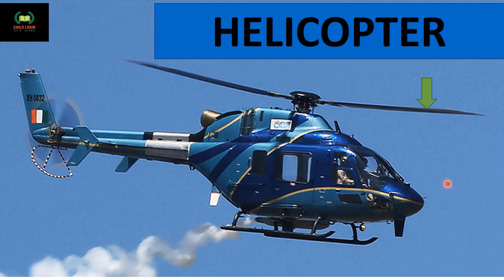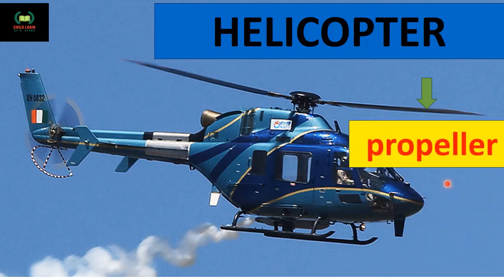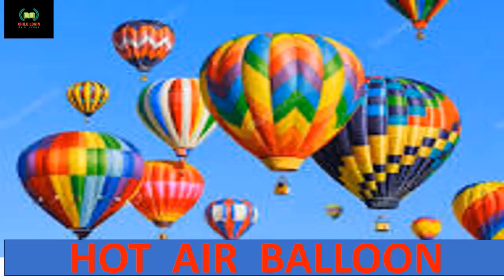This is a helicopter. A helicopter doesn't have as many seats as a car — maximum five to six people can sit in it. The rotating blade on top of the helicopter is called a propeller.